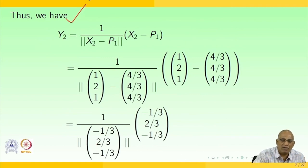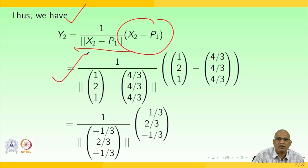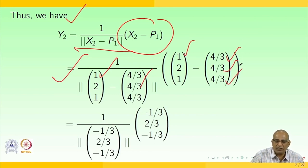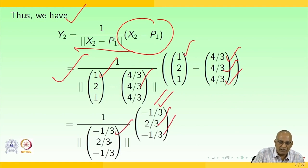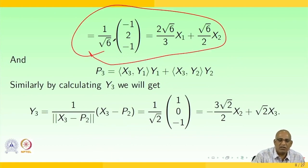Thus y₂ = (1/‖x₂ − p₁‖)(x₂ − p₁). Computing x₂ − p₁ = [1, 2, 1] − [4/3, 4/3, 4/3] = [−1/3, 2/3, −1/3]. Dividing by its norm, we get y₂ = (1/√6)[−1, 2, −1]. This is equivalent to expressing x₂ as a linear combination: (2√6/3)x₁ + (√6/2)x₂.